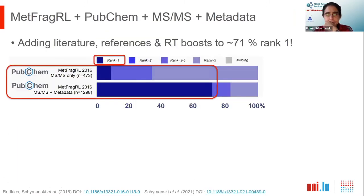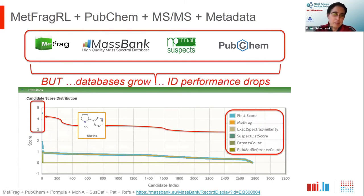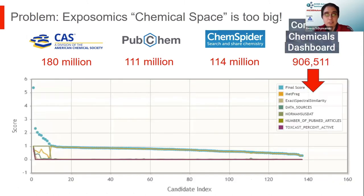We relaunched MetFrag in 2016, adding element selection, substructure information, retention time information, metadata from PubChem literature and patents, CompTox metadata, suspect list functionality, and connection to documented mass spectra for live lookup with experimental spectra. All these efforts were definitely worth it: we went from less than 10% to around 71% of our dataset ranked correctly in first place. With nicotine and PubChem, nicotine is now clearly ranked in first place. But our challenge is that we have almost 3,000 candidates for this mass, and as PubChem was growing our run times were rising — over a day for a 20-minute analytical run.